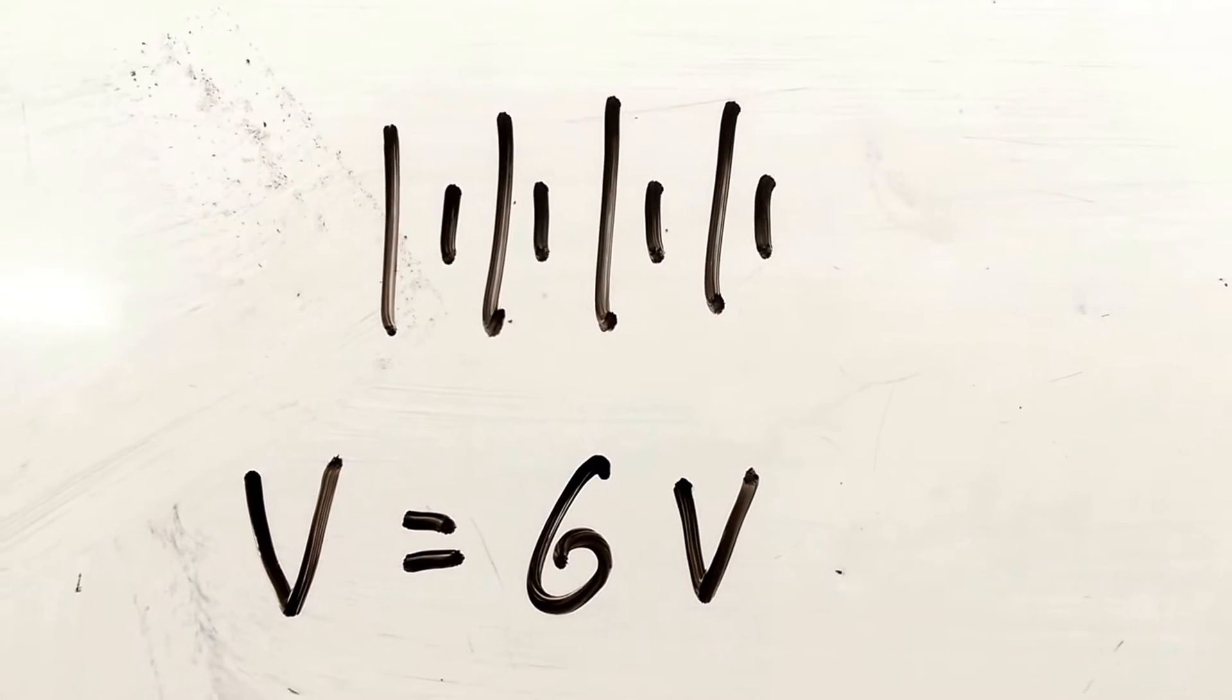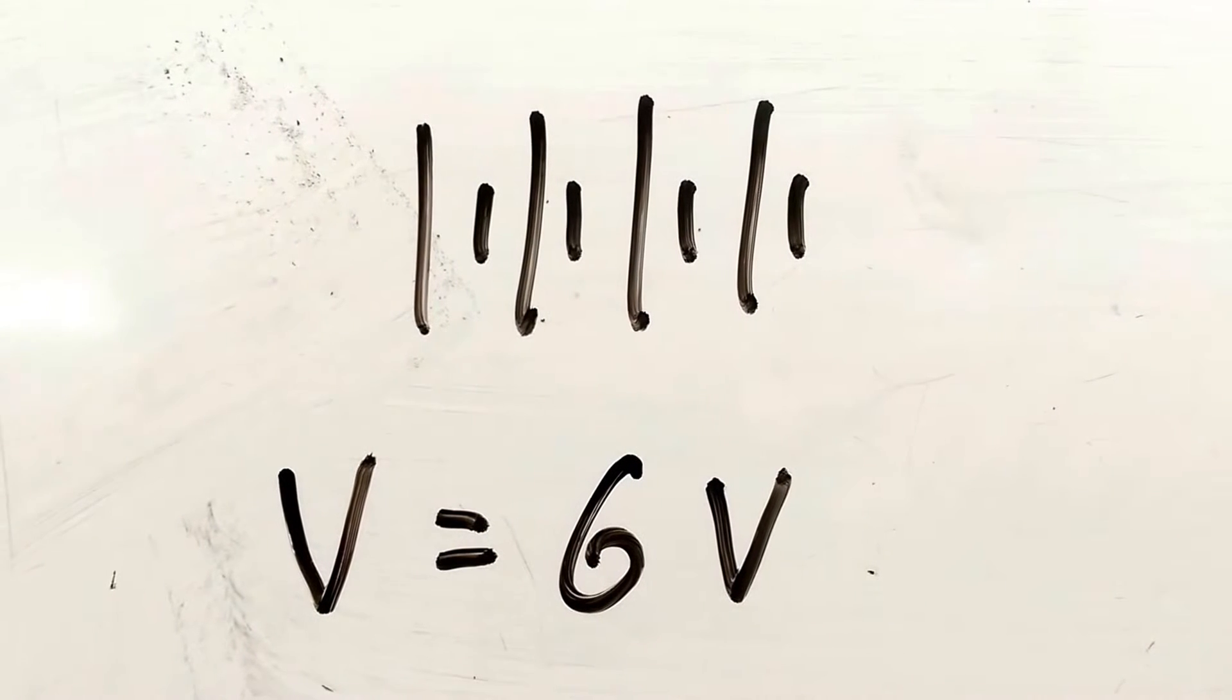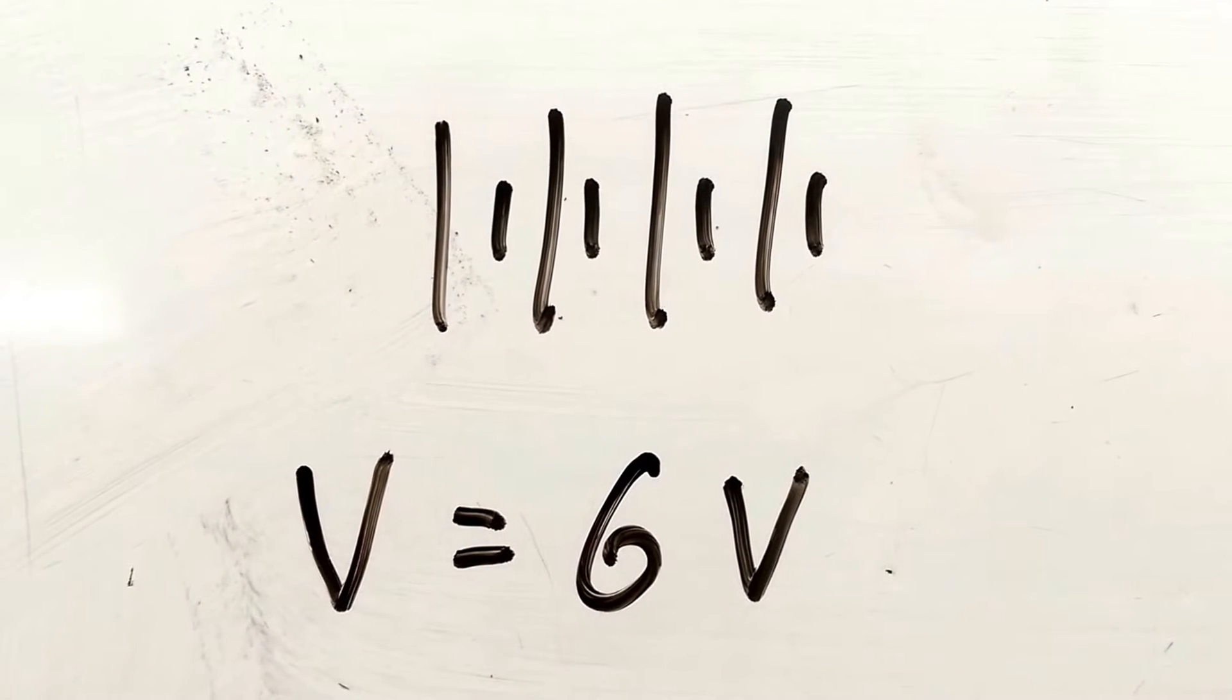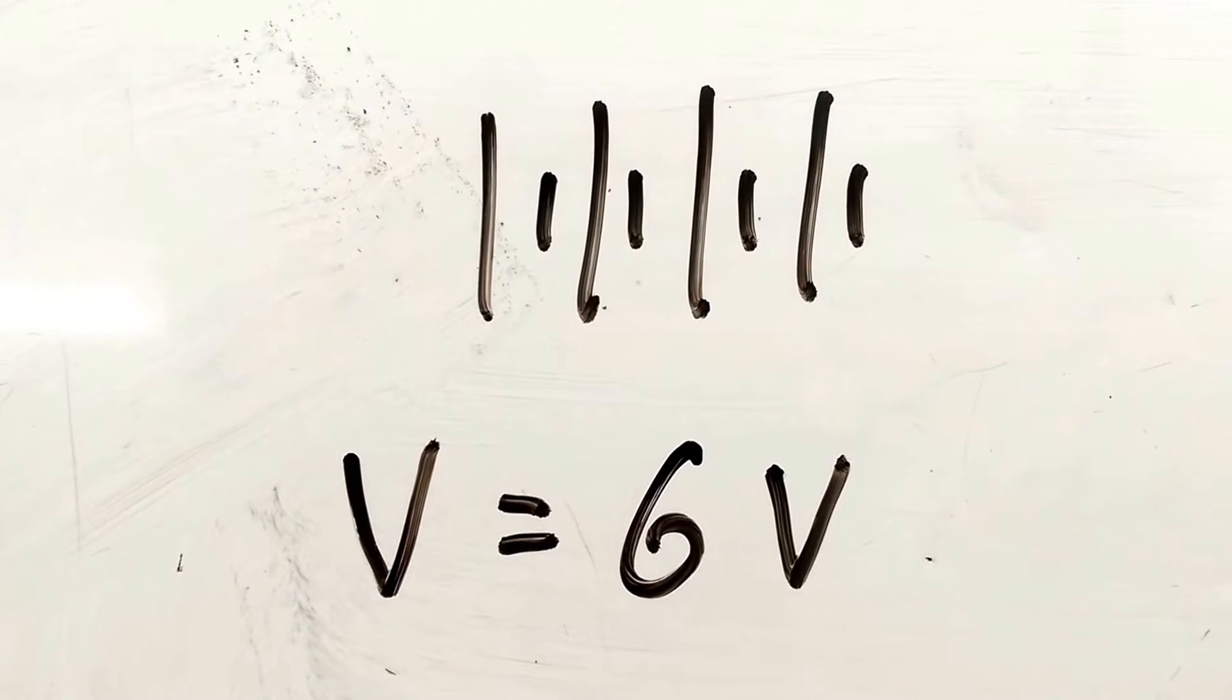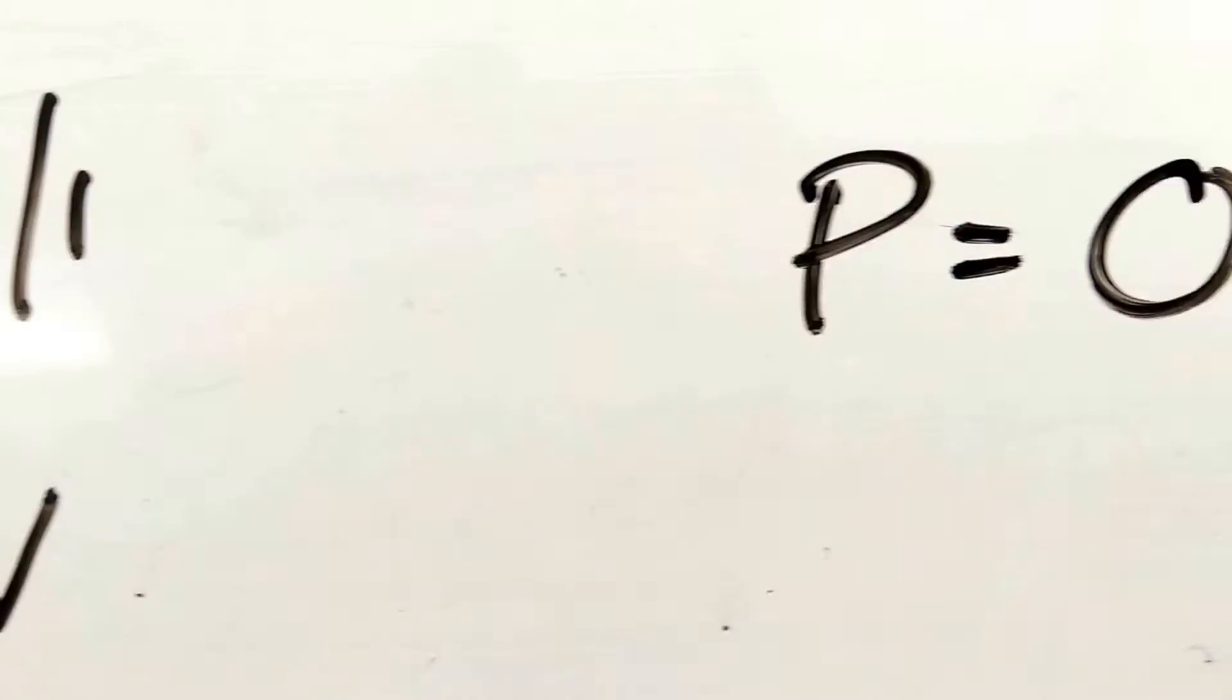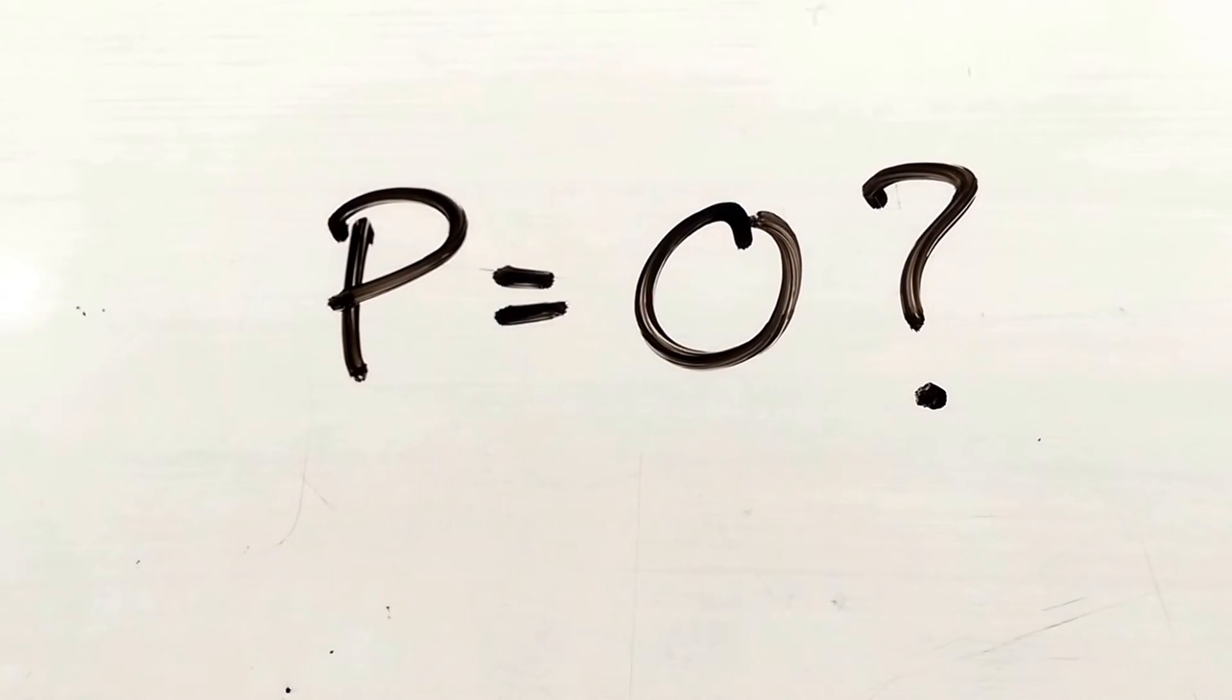Let's just take an ordinary battery. It's got four cells, each 1.5 volts, so the total voltage is 6 volts. Quite a powerful cell, quite a powerful battery. Well, no, because the power is zero.